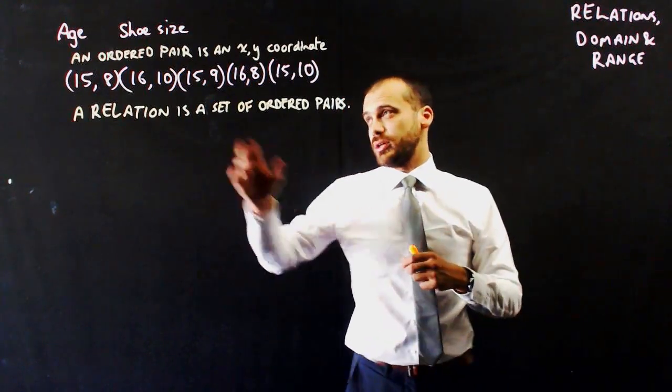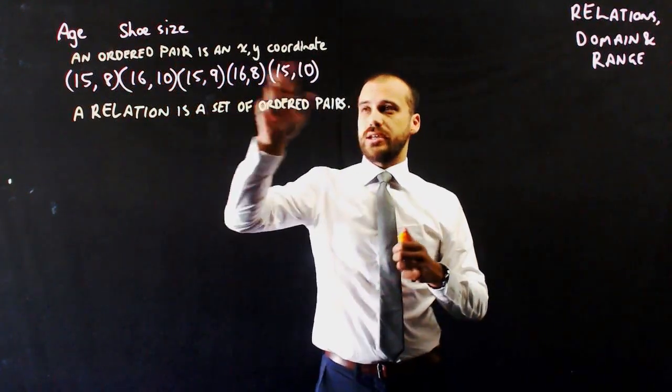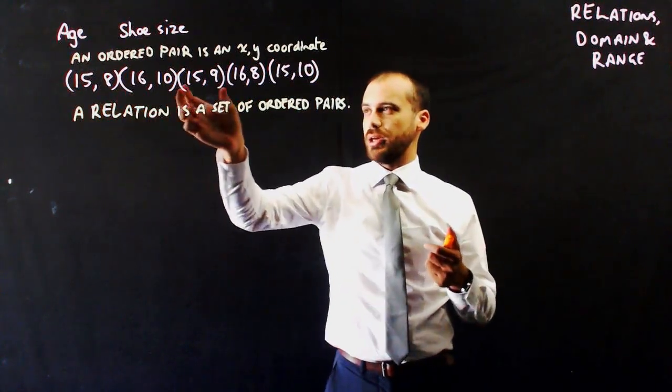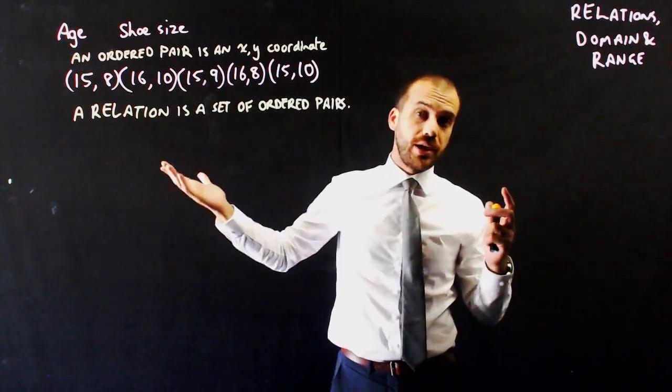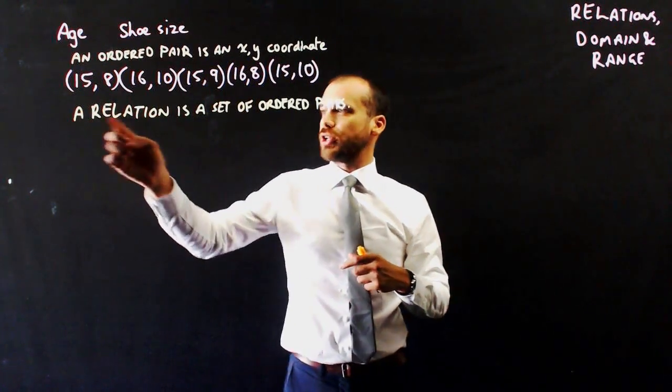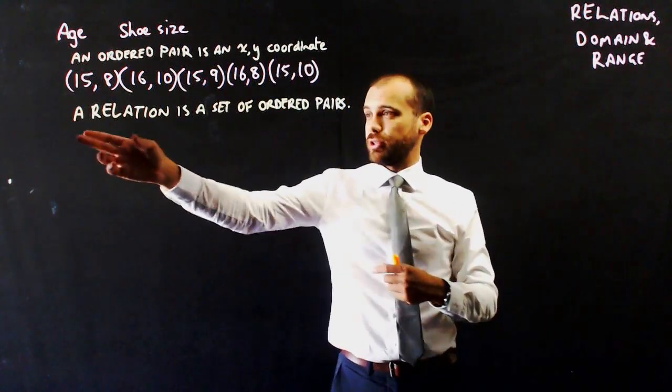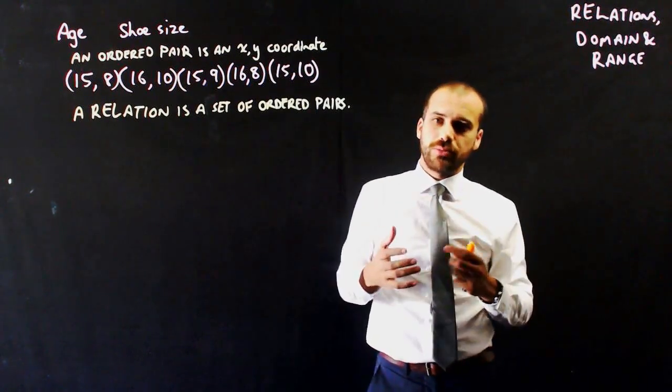So a couple of quick definitions. An ordered pair is an x and y coordinate. So we can just call that an ordered pair. There's five ordered pairs there. A relation, which is what this is, and what this video is about, a relation is a set of ordered pairs.